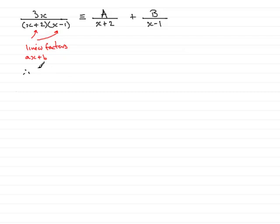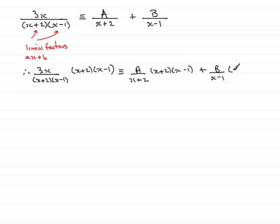what I will have will be the first fraction, 3x over (x+2)(x-1), and that's multiplied by (x+2)(x-1). Then I'm going to multiply each of these terms also by (x+2)(x-1). And the same with the last fraction, B over (x-1), and that's being multiplied by (x+2)(x-1).